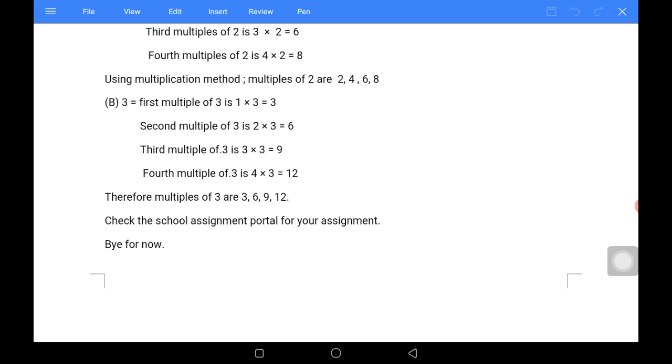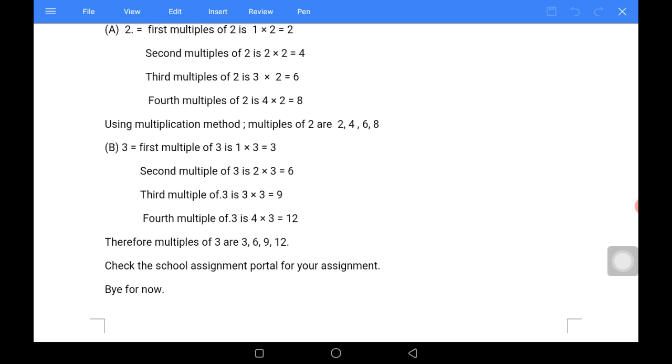First multiple of three is one times three which is equal to three. That is, three in only one place. Second multiple of three is two times three which is equal to six. That is, three in two places. Third multiple of three is three times three. That is, three in three places and this will give us nine.